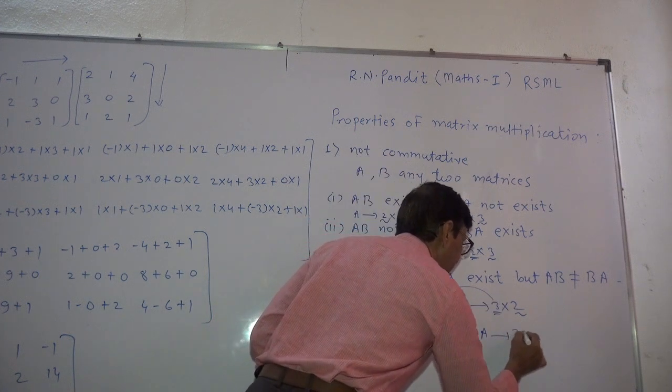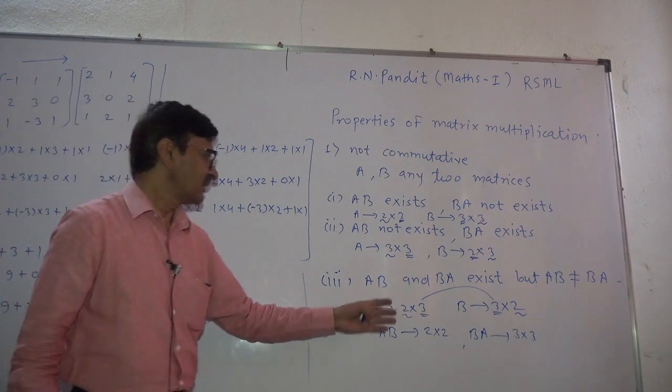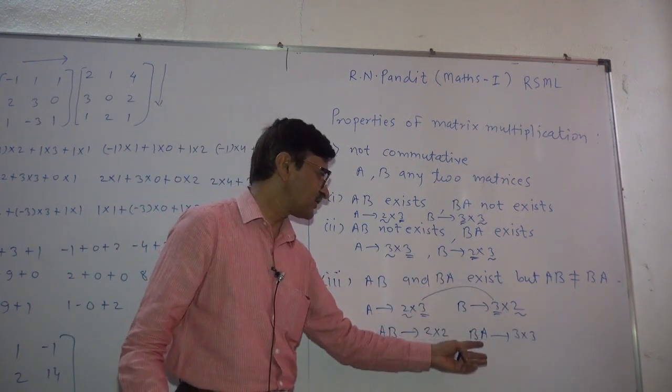The order is 3 by 3, here the order of BA is 3 by 3. Now, AB existing, BA existing.